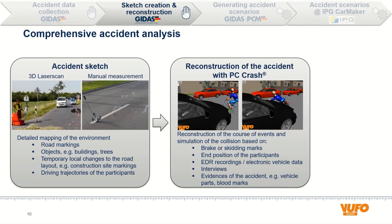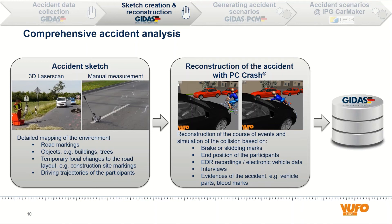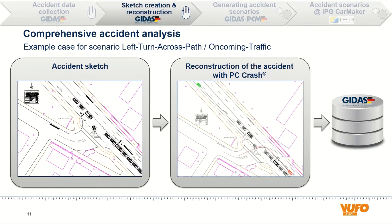Specially trained and experienced personnel perform these tasks with the help of a reconstruction program named PC Crash. The reconstruction engineers try to create the most probable course of the accident participants. All information mentioned here is stored in GEDAS after a final check. On the left side, the final result of the accident sketch is shown for our example case. On the side you can see a video of the accident reconstruction, which shows the curves of the movement of the involved participants. These data represent the result of the manually generated accident data and the basis for the generating of the accident scenarios.